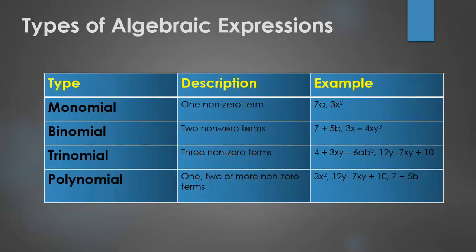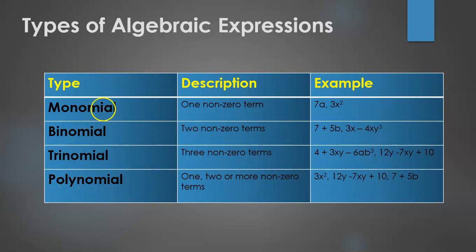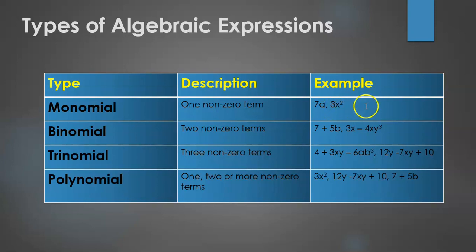Now let's understand different types of algebraic expressions. We have monomials, binomials, trinomials, and polynomials. Mono means 1, bi means 2, tri corresponds to 3, and poly corresponds to multiple. A monomial is an algebraic expression comprising one non-zero term — for example, 7a and 3x squared are each monomials.